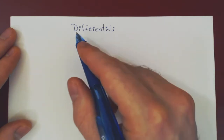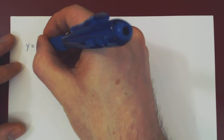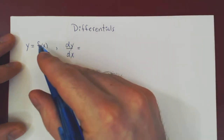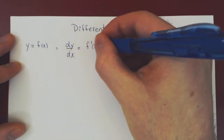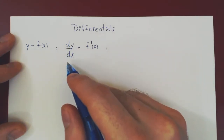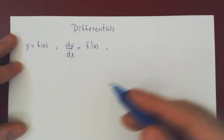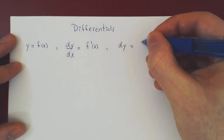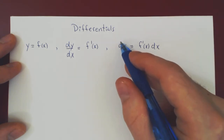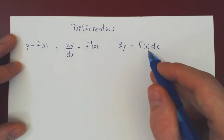In this video we want to review the notion of differentials. If we think of y as a function of x, we can differentiate y with respect to x and write this as f prime of x. If we think of dy as an infinitesimal change in y and dx as an infinitesimal change in x, we can multiply across by dx and arrive at dy equals f prime of x dx — the differential of y equals f prime of x times the differential of x.